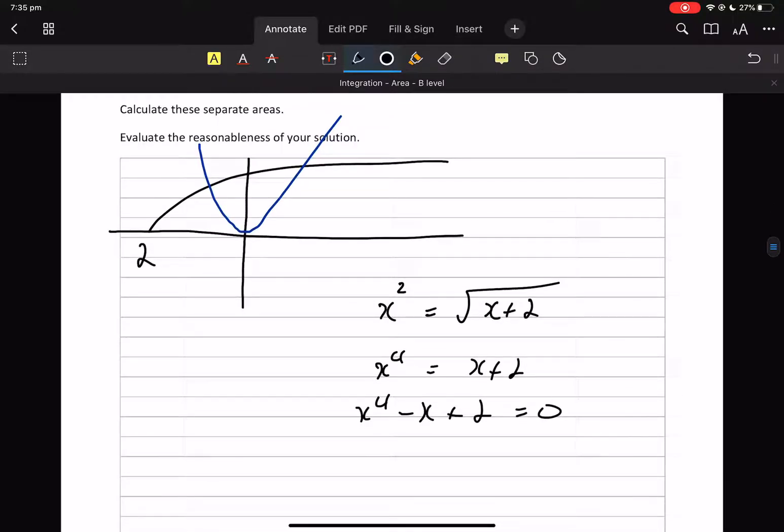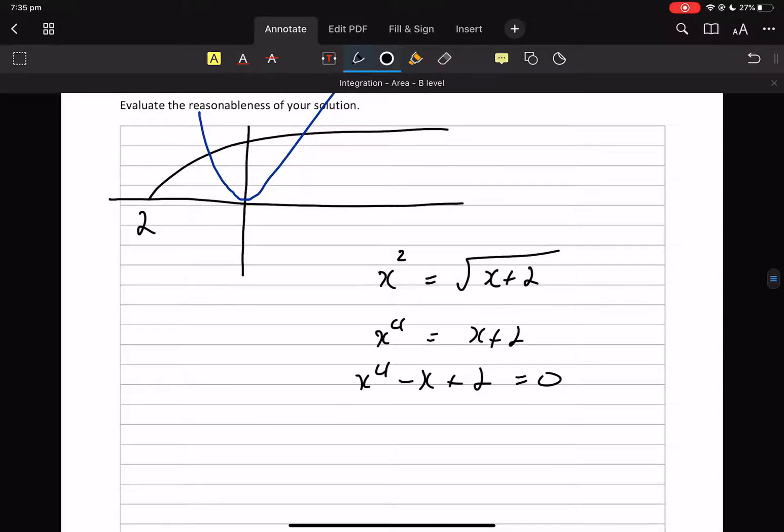So to guess and check a value for x that makes that 0. Hey, I think I'm going to check -1. So when -1 goes in there, it goes to +1. Oops, it's -2, isn't it, because it's gone to the other side. So that's 1 + 1 - 2 = 0.